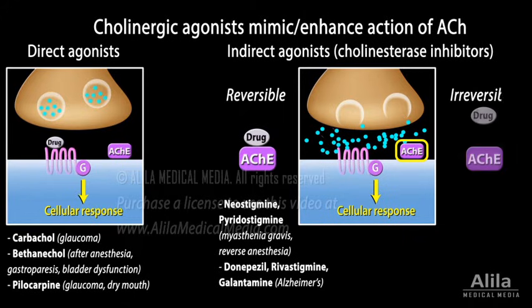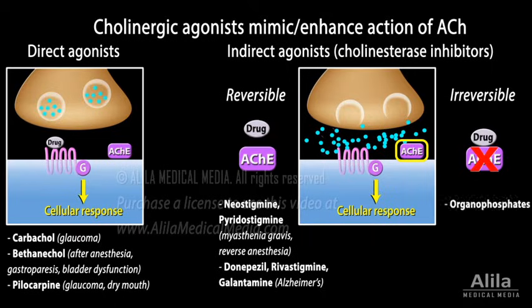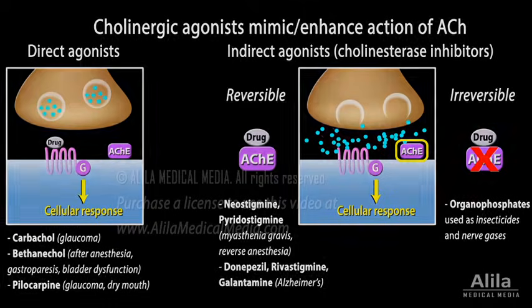Irreversible cholinesterase inhibitors bind to the enzyme in an irreversible manner and permanently inactivate it. These drugs are very toxic and are used as insecticides and nerve gases.